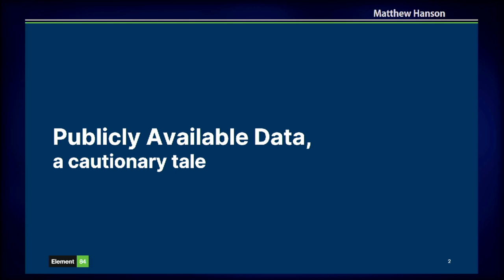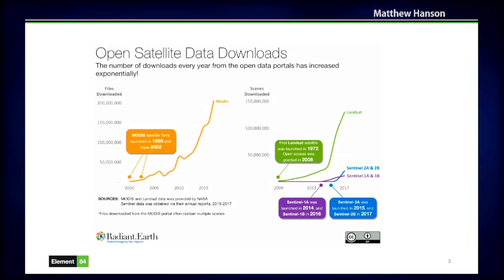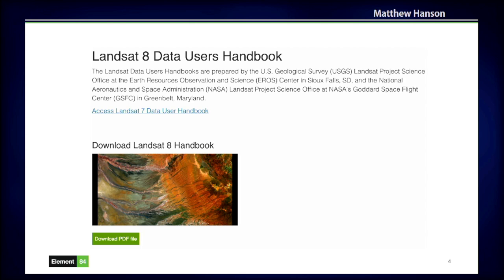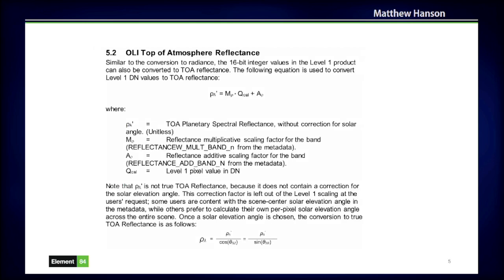I want to start with a cautionary tale about publicly available data. It turns out when you actually make data publicly available, people use it in ways you just didn't expect, and scientists don't much care for that. Once the NASA and ESA data was made free and available on platforms like AWS, everybody downloaded it and used it. Very few of those people actually read the Landsat 8 user handbook, which states that the distributed data wasn't corrected for sun angle — meaning you couldn't compare it across multiple days. Yet people were calculating NDVI and building time series, and when I went to the Landsat science team meeting, they said 'oh, they shouldn't do that.'